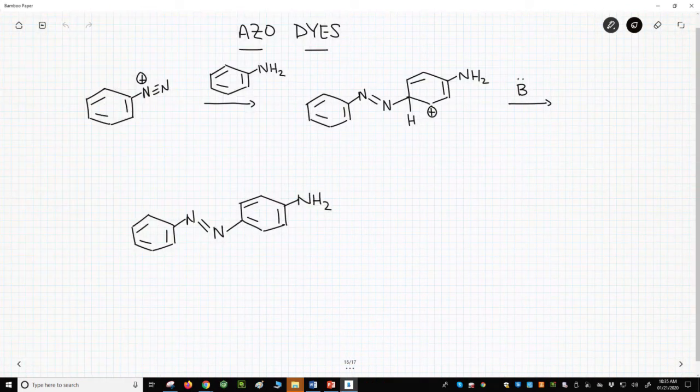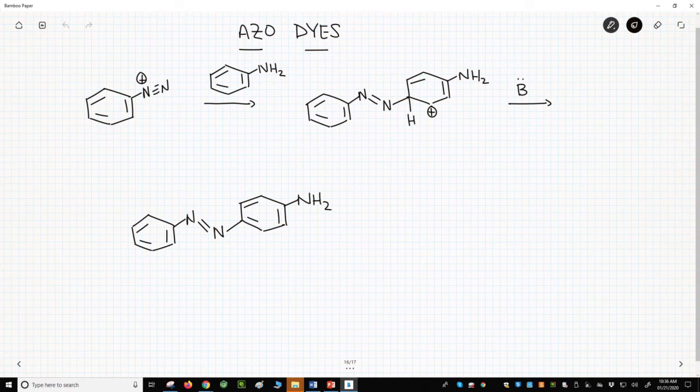All the other reactions to diazonium ions in this playlist convert the diazonium ion into a different functional group. The nitrogens of the diazonium ion are absent in the final product. The earliest diazonium ion chemistry actually kept those nitrogens in the product, and one of those reactions is on the screen.